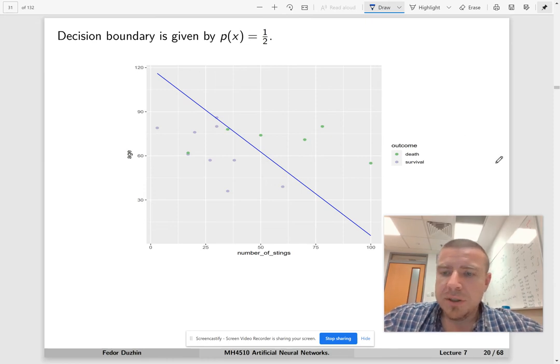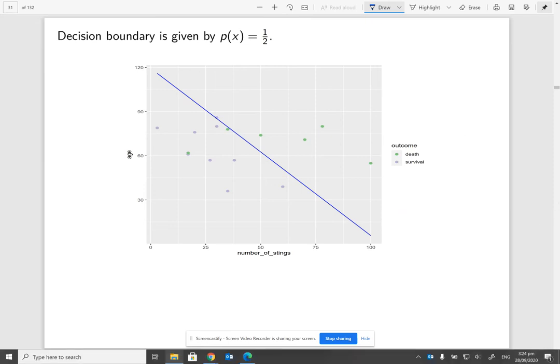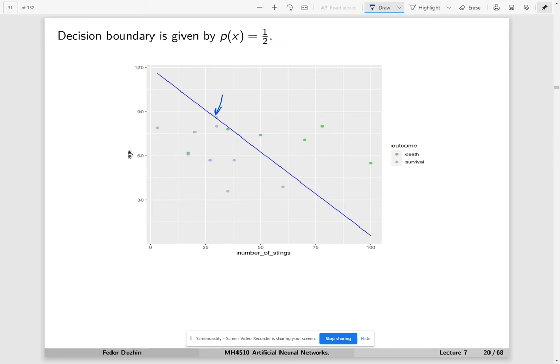Okay, so here is the decision boundary, and notice a funny thing. So notice that now three observations are misclassified. So this is misclassified, this is misclassified, and this is misclassified.